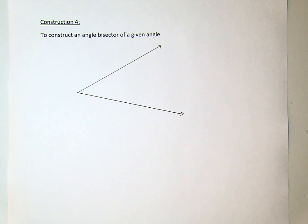The following is construction 4, which is to construct an angle bisector of a given angle.